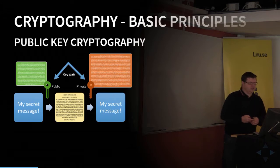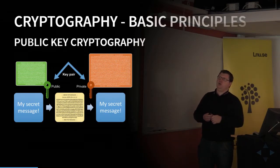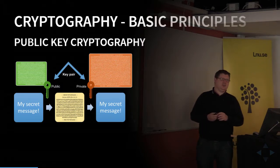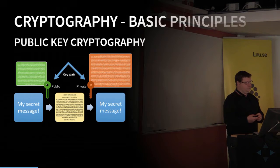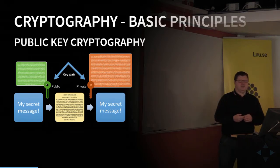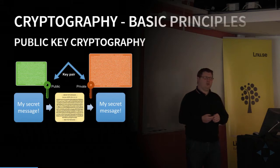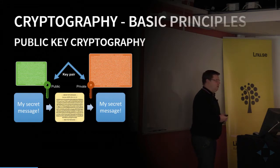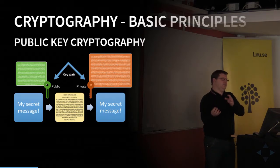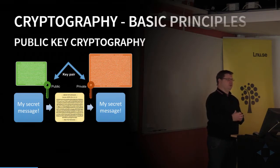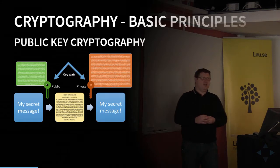Another way is something called public key cryptography. Here we have two keys created together, so they have a special bond. We can encrypt with both, but the key we encrypt with can't decrypt the message again — only the other key can decrypt it.